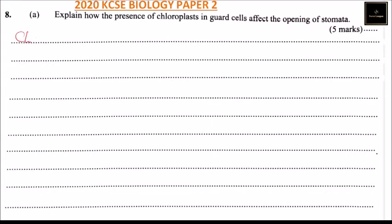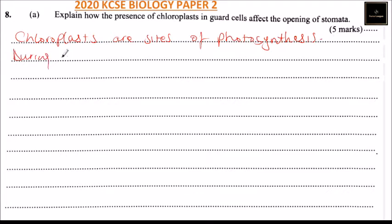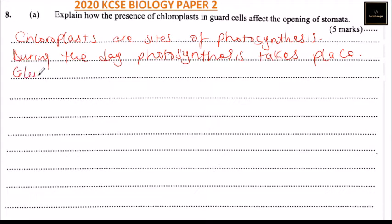Chloroplasts are sites of photosynthesis. During the day, photosynthesis takes place and glucose is manufactured.